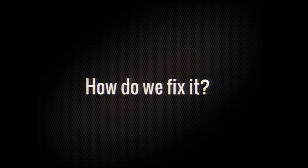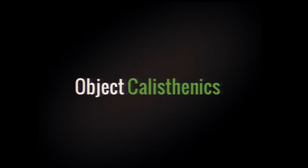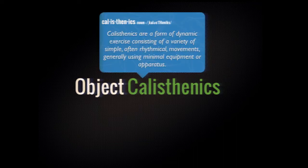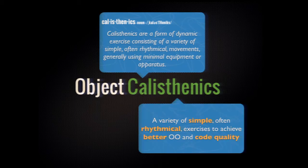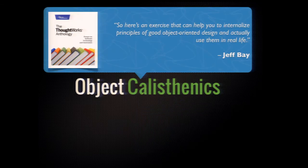A few years ago, while still working in Brazil, my team decided to look up a term called Object Calisthenics. Calisthenics comes from Greek — it's basically a series of rhythmic exercises, small things you do to improve your health long-term. That actually works for code too: it's a variety of simple things you do on your day-to-day basis when writing code to generally increase the quality of your object orientation. This was first introduced by Jeff Bay in the ThoughtWorks Anthology — a really good book, highly recommended.